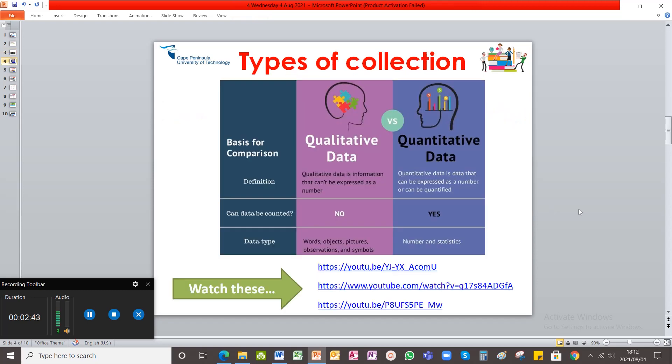Now there are different types of data that you can collect. Remember different methodologies: qualitative, quantitative and mixed methods. Now the two types of data that you can collect are predominantly qualitative and this can't be counted. So qualitative data is information that can't be expressed as a number. So how is this data represented? This data represented through words or objects, observations, pictures, symbols, something that must be interpreted by the researcher. But quantitative data, on the other hand, is data that can be expressed as a number or can be quantified. So there's quantity. Can it be counted? Yes. And this type of data would be represented through numbers, percentages, statistics.